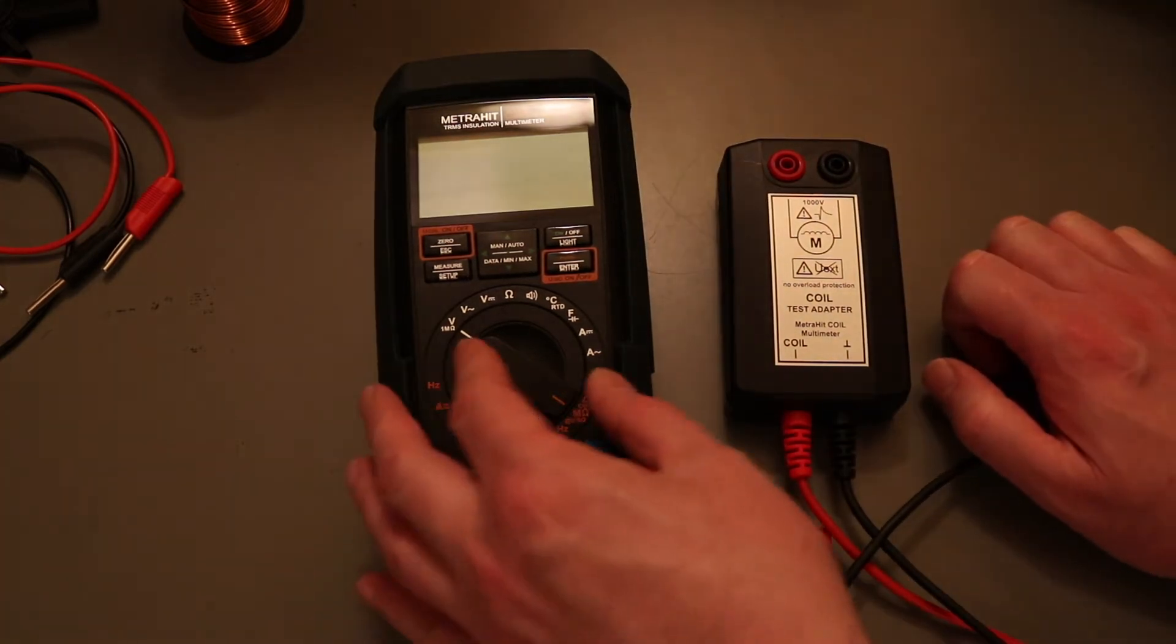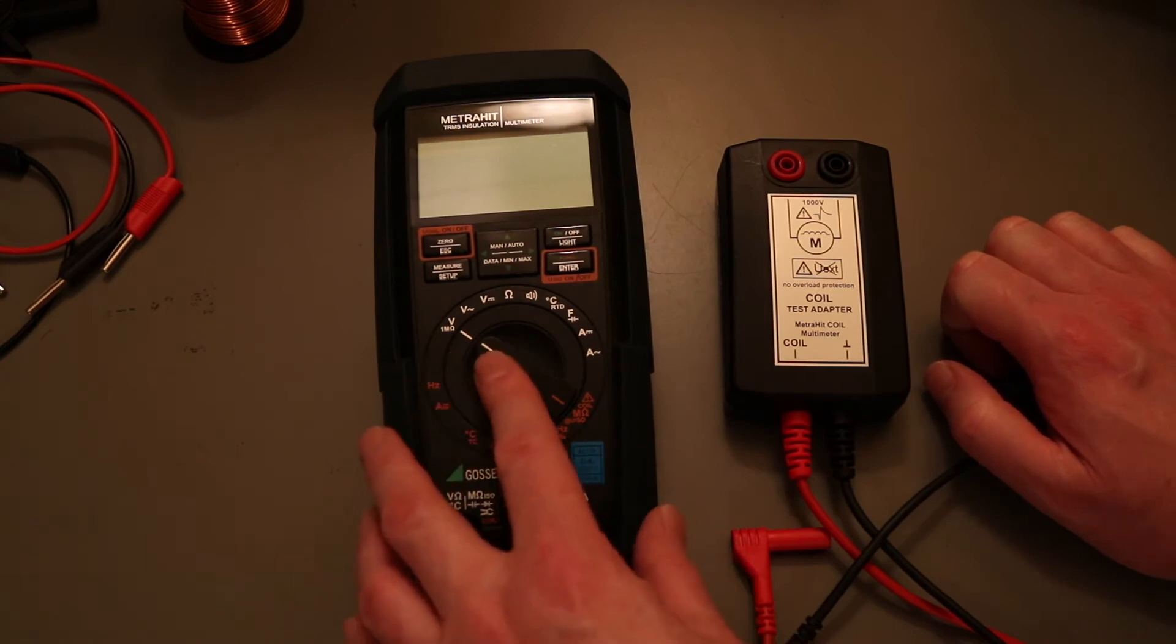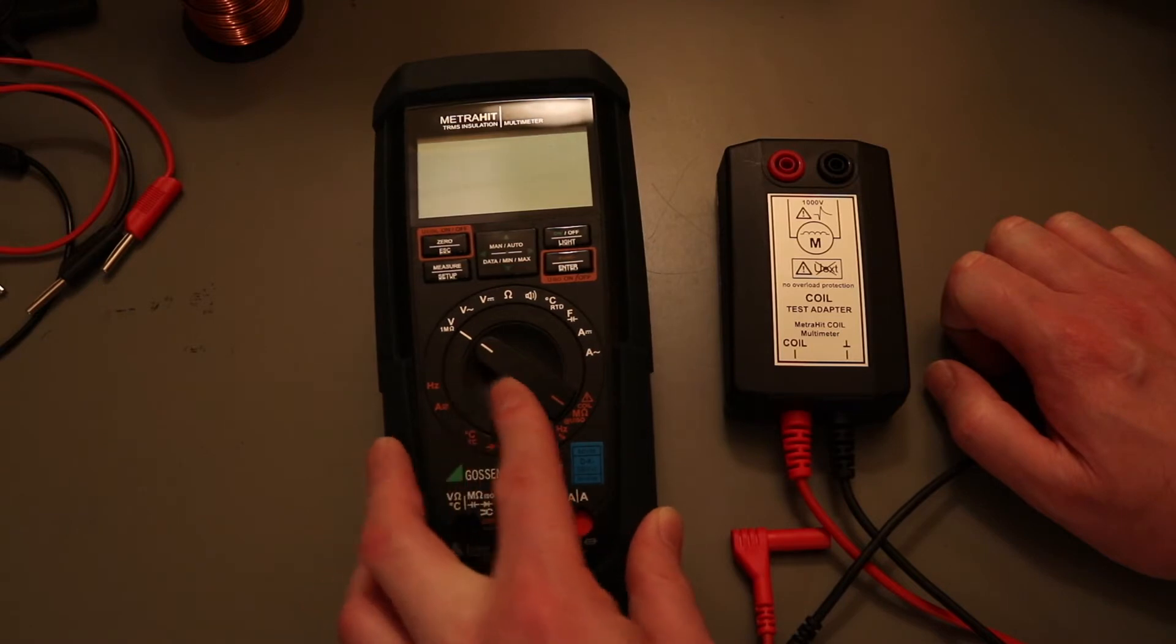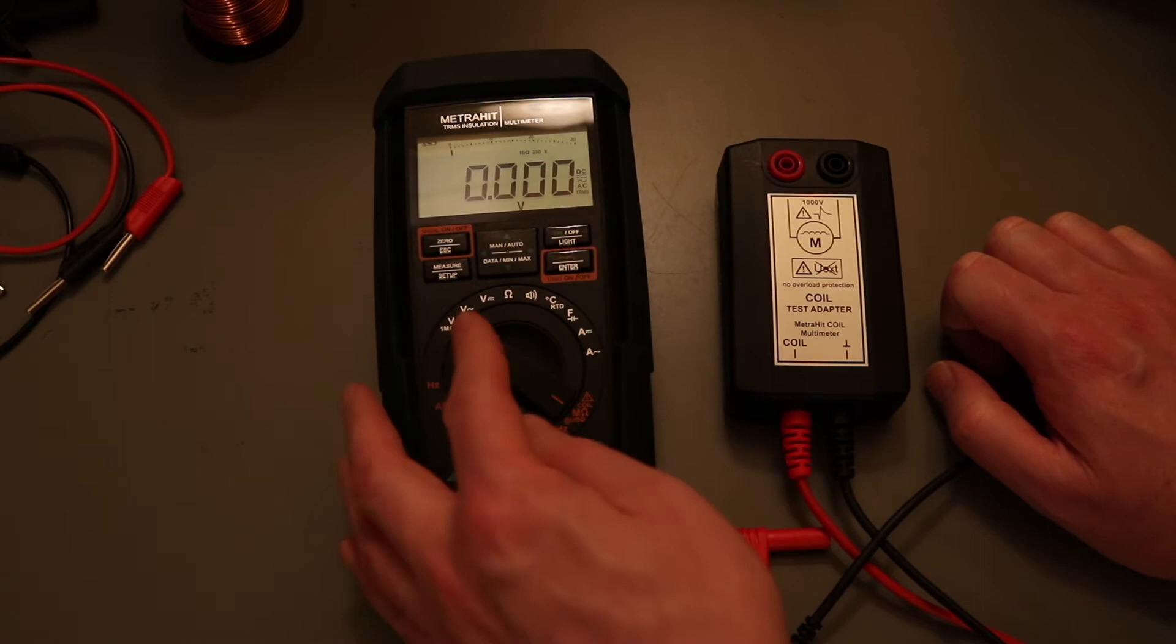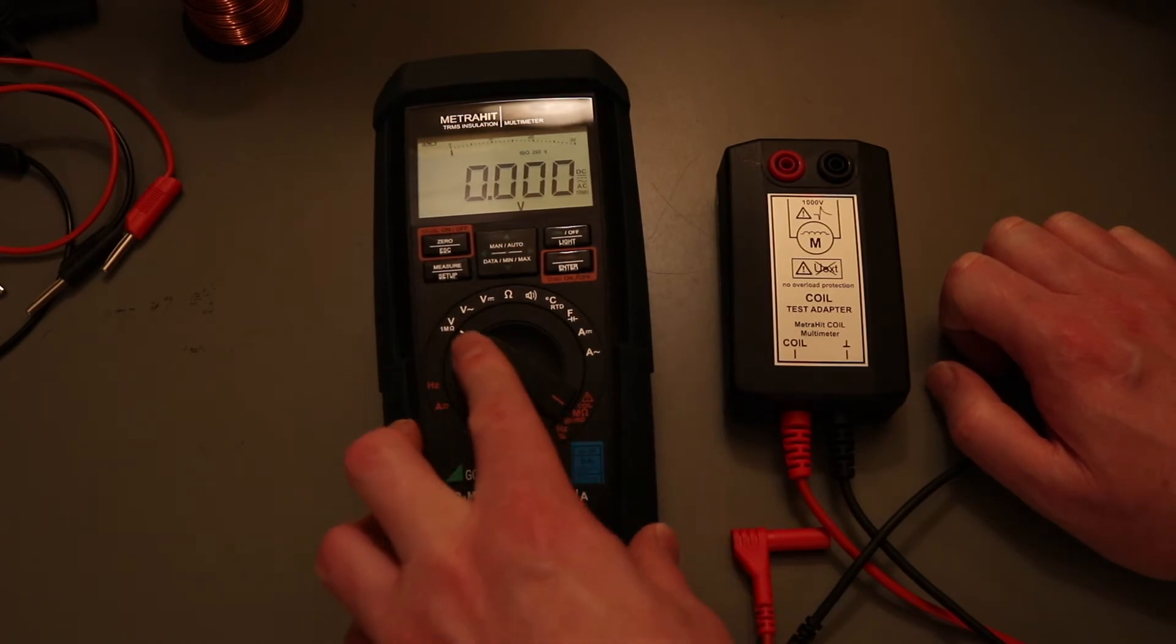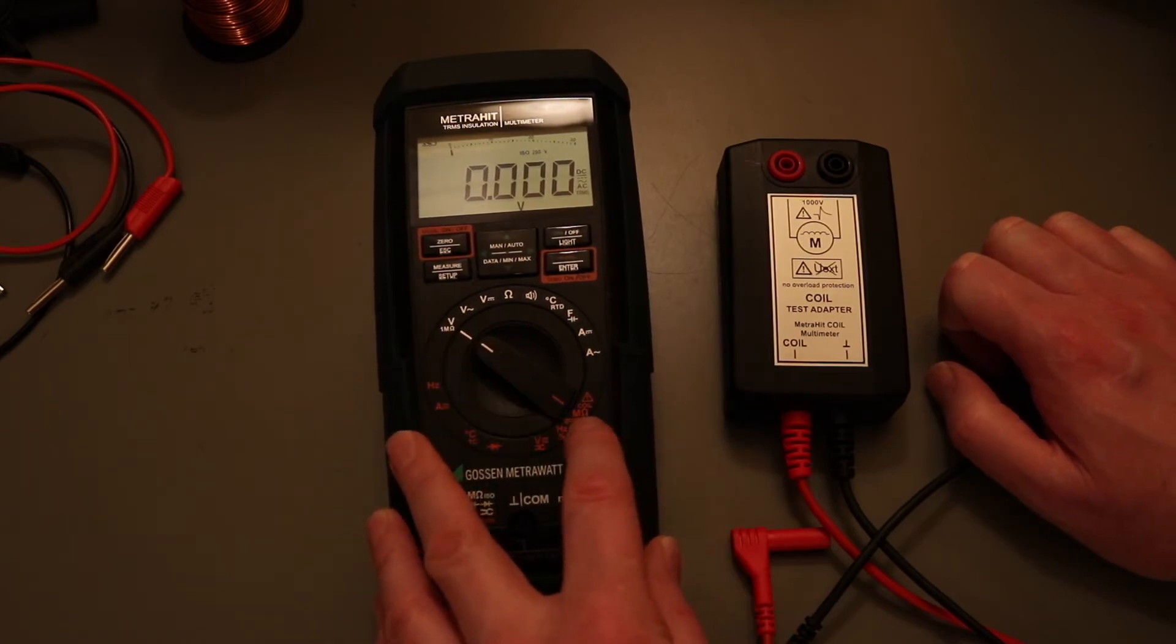So the meter itself, various functions on there. Fairly unique to the MetraHit really is these dual functionality on the rotary switch. And if you turn them on, so the insulation test function is shared with the coil test function.